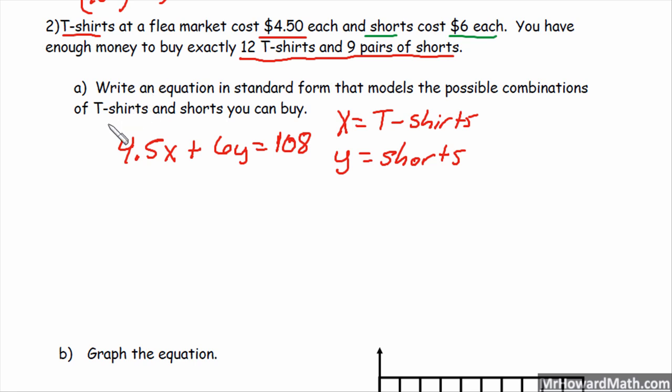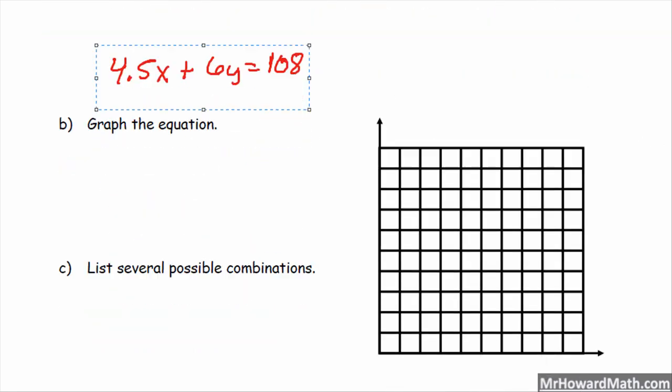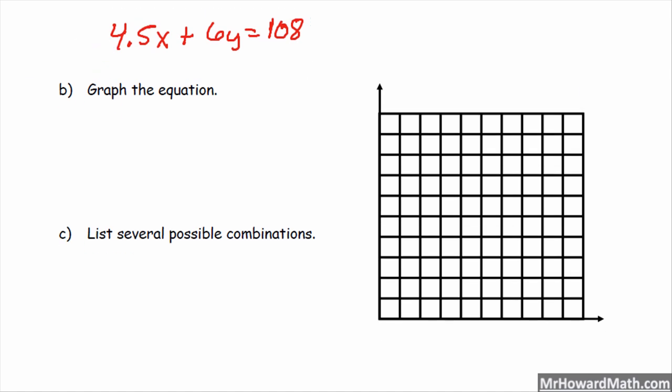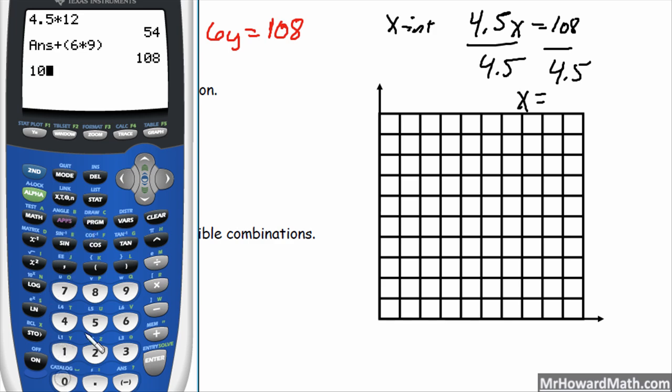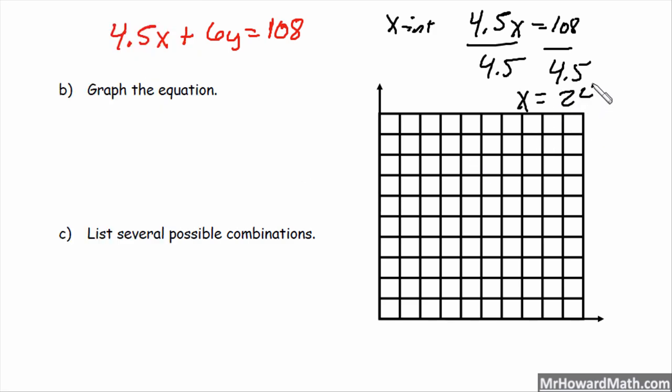So next, it says graph the equation. We're going to use our intercepts. So to find the x-intercept, we set y to 0. So basically, cover it up and solve. So we would have 4.5x equals 108, divide by 4.5. So 108 divided by 4.5 gives us 24. So the x-intercept is 24.